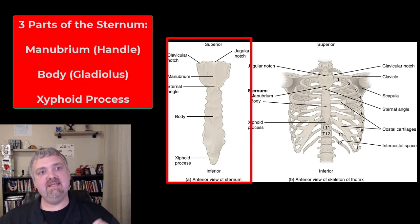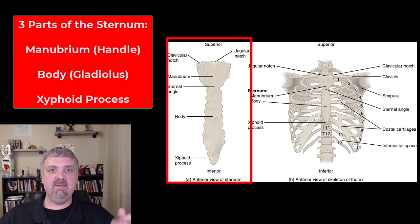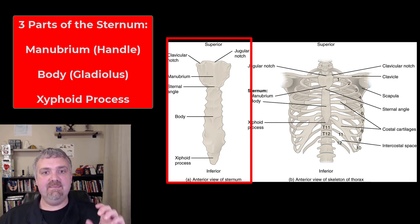The sternum has three parts: the manubrium, the body (also known as the gladiolus), and the xiphoid process. The manubrium - manu meaning hand - looks kind of like a knife handle if you turn it over. So you have the handle, the body, and the tip: the manubrium, the body or gladiolus, and the xiphoid process.